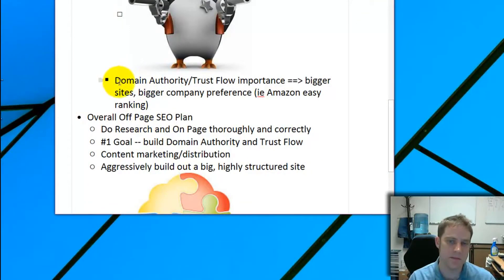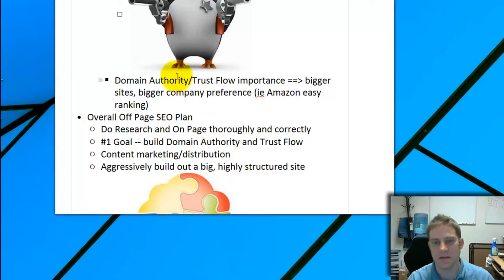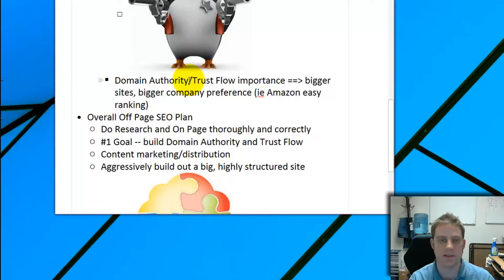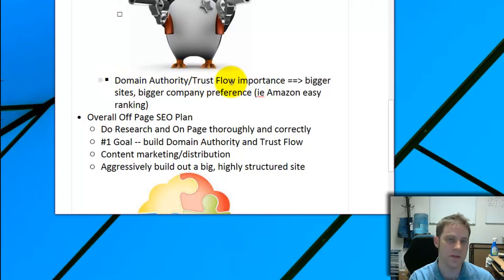Domain Authority is a much better metric than PageRank — it measures how much authority Google gives your domain. It's not a Google metric; it's calculated by a company called Moz. It's not perfect and misses some things, so take it with a grain of salt. It's also interconnected with something called Trust Flow.